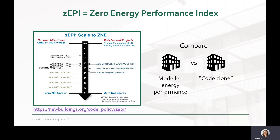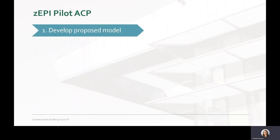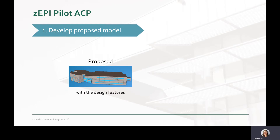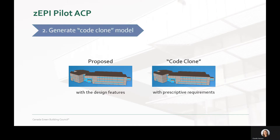You do this by creating what is called a code clone energy model, which represents the building just meeting the prescriptive requirements of the standard being used and comparing it to the building's energy performance. Now let's walk through the four steps to determine your LEED points. The first step is to develop a proposed energy model in accordance with the design features of the project building. The details of how to account for things like unregulated loads and unfinished spaces are included in the Pilot ACP. The second step is to create an energy model for the code clone, which is the baseline model used for comparison when using the ZEPI calculation methodology. You simply take each relevant feature of the proposed energy model and revise it to reflect what that feature would look like if it was designed to the prescriptive requirements of the standard you are using.